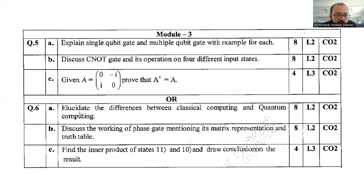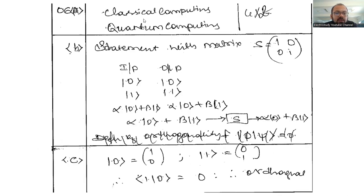Question number six A: Elucidate the differences between classical computing and quantum computing. What would be the answer? You have to explain about the classical computation and difference. You have to bifurcate. What is the difference between classical computing and quantum computing? Question number six A is very clear, right?